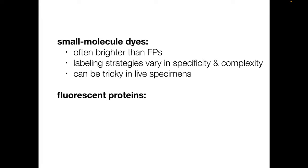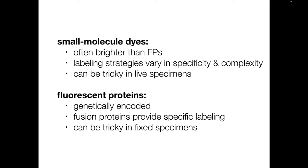Fluorescent proteins, on the other hand, excel in live specimens since they're genetically encoded, and therefore produced by the specimen itself. The level of specificity achieved by fusing a fluorescent protein to a protein of interest is very high. Fluorescent proteins can be tricky to use in fixed specimens. Some fixatives can damage the chromophore, leading to a decrease in fluorescence.